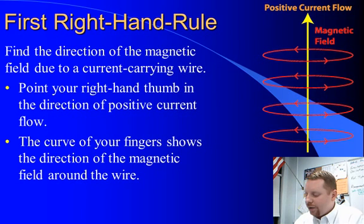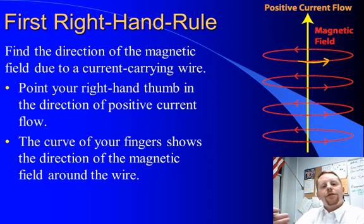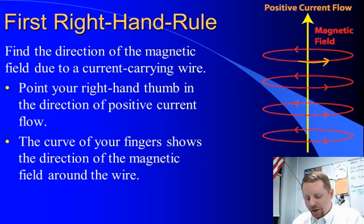For example, over here on the right we have a picture of positive current moving upward through a wire. The magnetic field goes in front of it on its way to the right and behind it on the way to the back. So it's in a circle, a circular path around that wire.